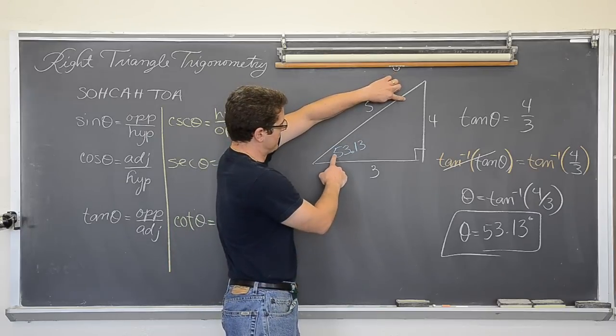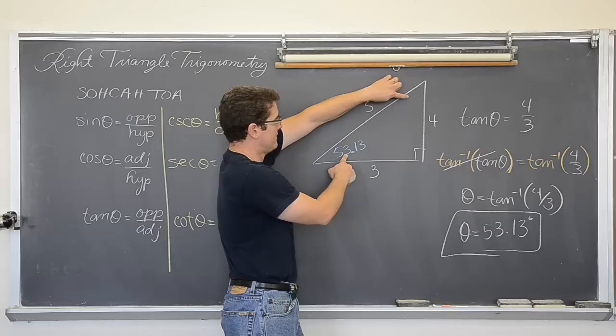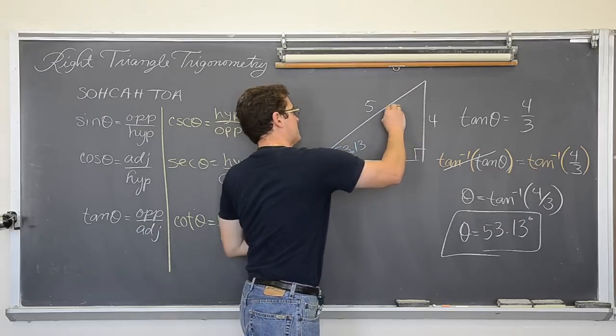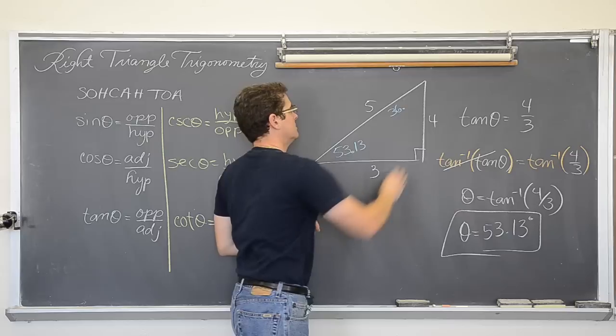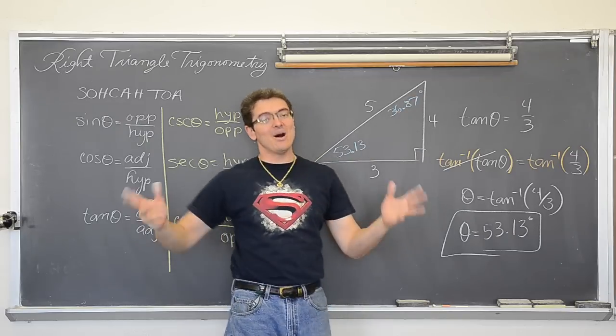So let's see. We have 90 minus 50 is 40. 40 minus 3 is 37. So now we have 36.87 degrees. Now I am done.